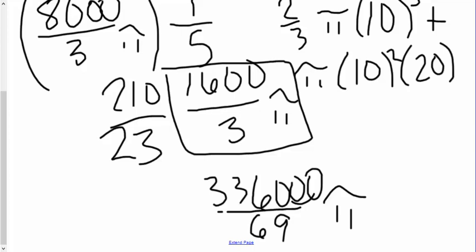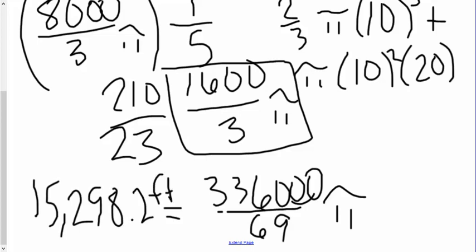Which this can definitely be reduced, but we don't actually care about that. We just care that our answer is going to be those two quantities multiplied together. And that is a total of fifteen thousand two hundred and ninety-eight point two feet cubed of water.